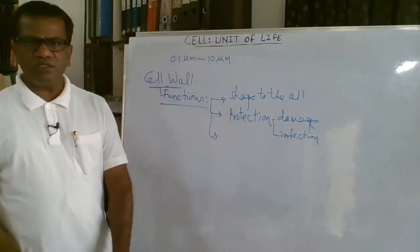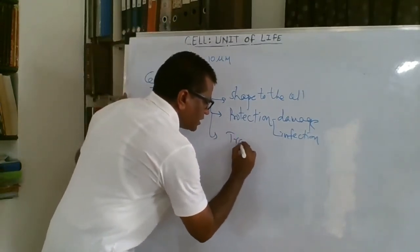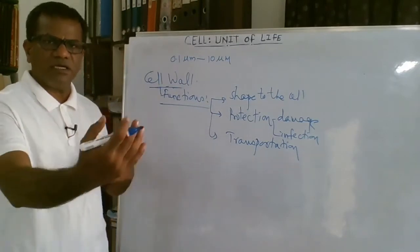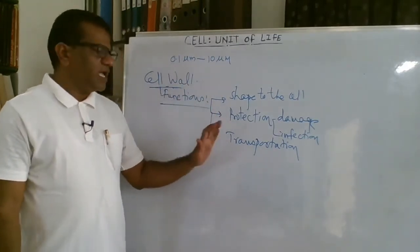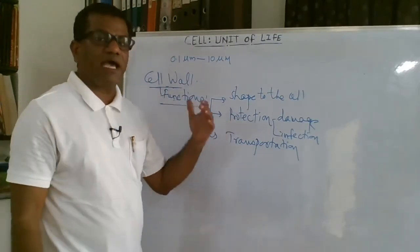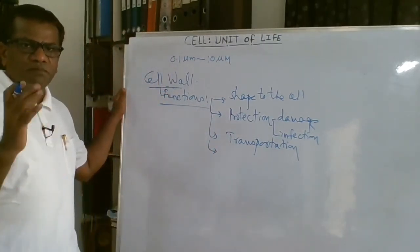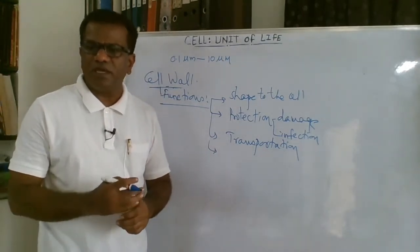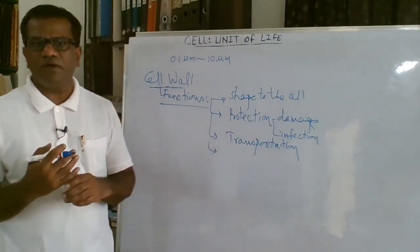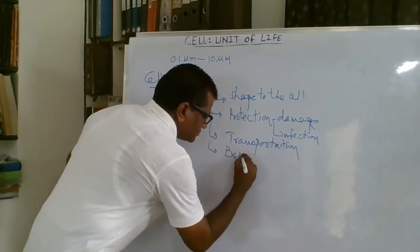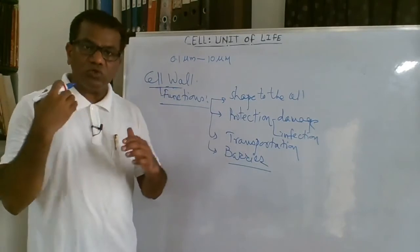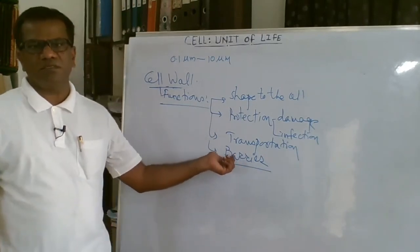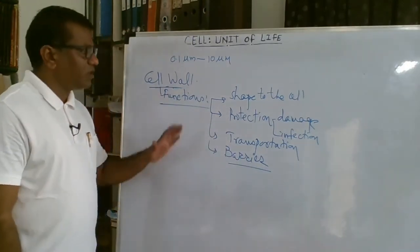Another important function is that the cell wall allows transportation of material from cell to cell — either via plasmodesmata or, if the secondary cell wall is absent, directly through the primary cell wall. The cell wall also prohibits unnecessary entry of materials, forming a barrier so that anything should not enter the cell indiscriminately.